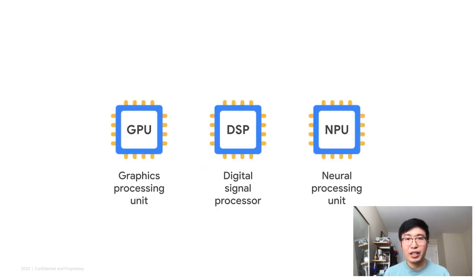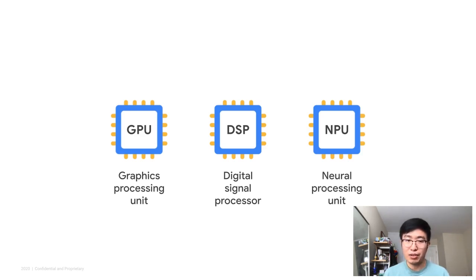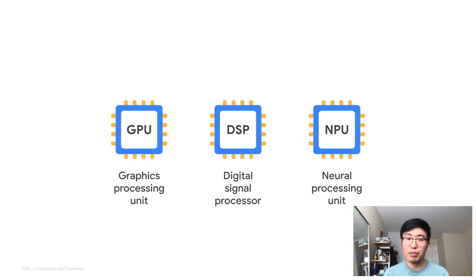The key objective of the Neural Networks API is to make inferences run fast and efficiently on as many devices as possible. To achieve that, we need to make sure that inferences running through the API can run on the accelerators available on the device.